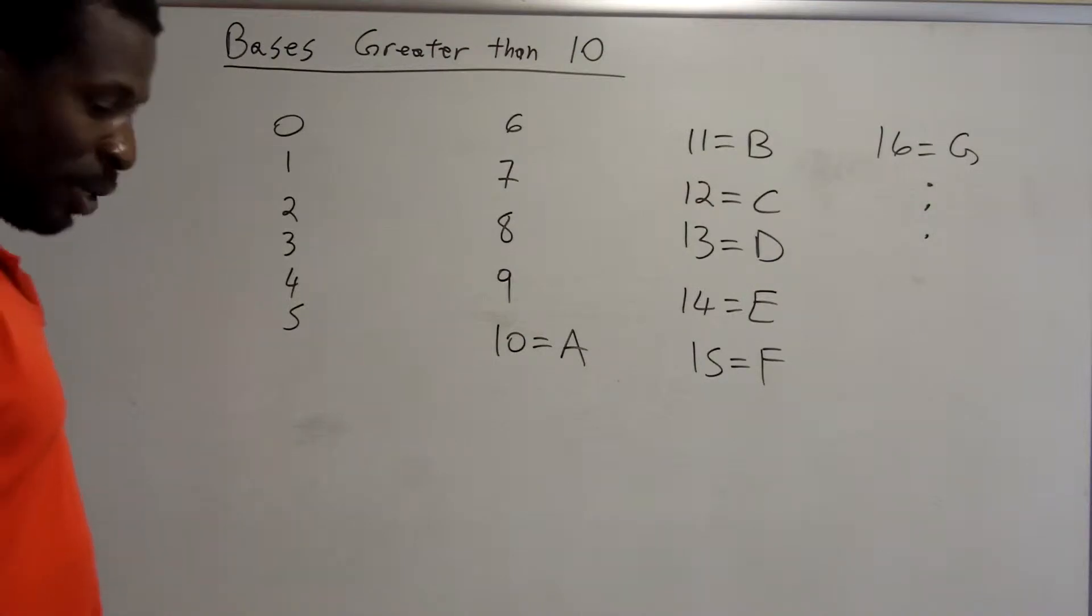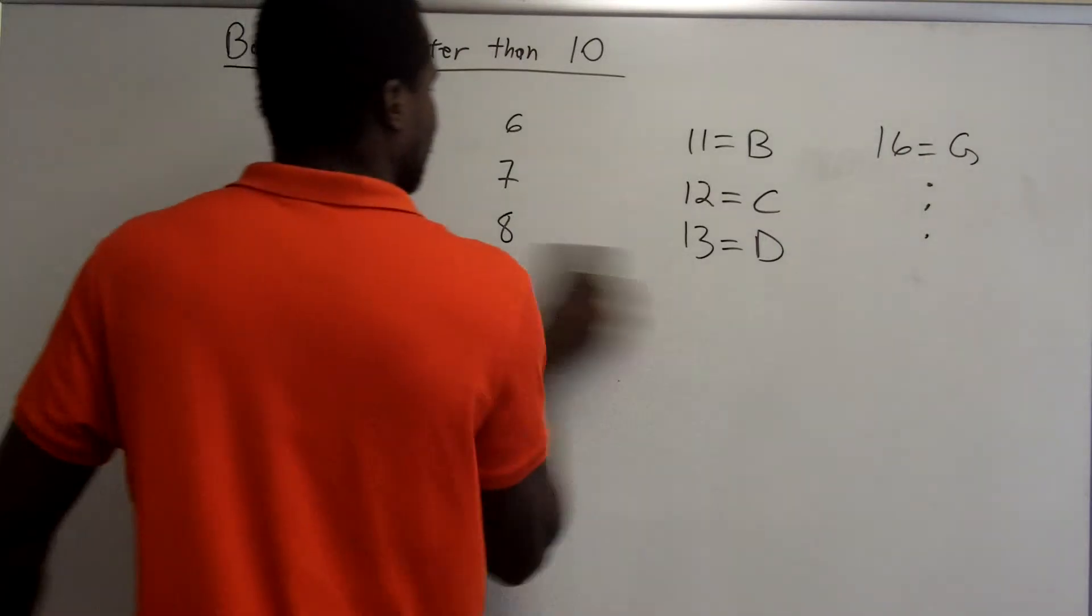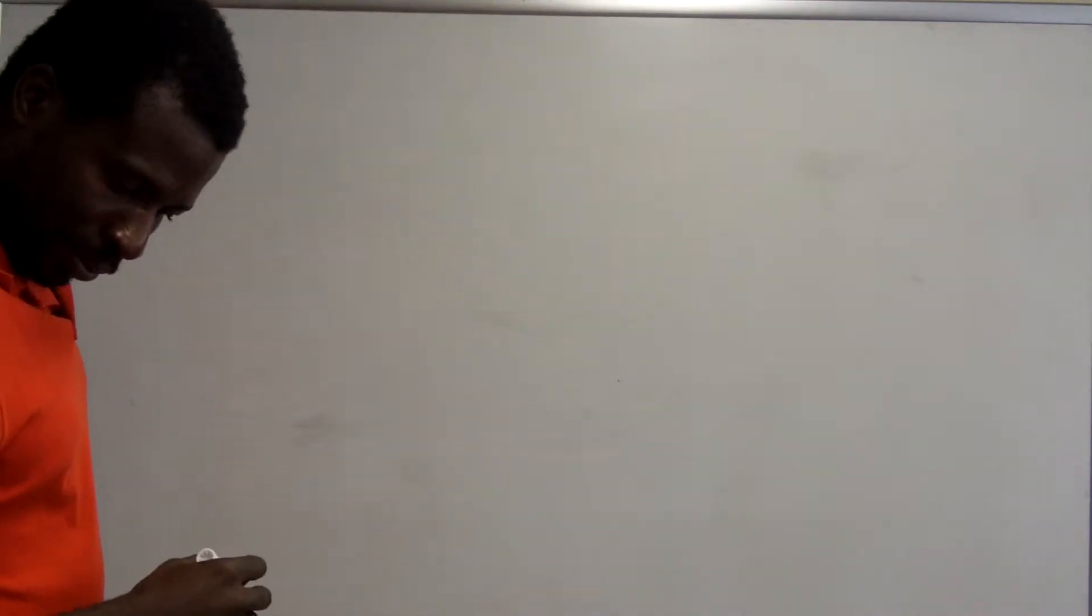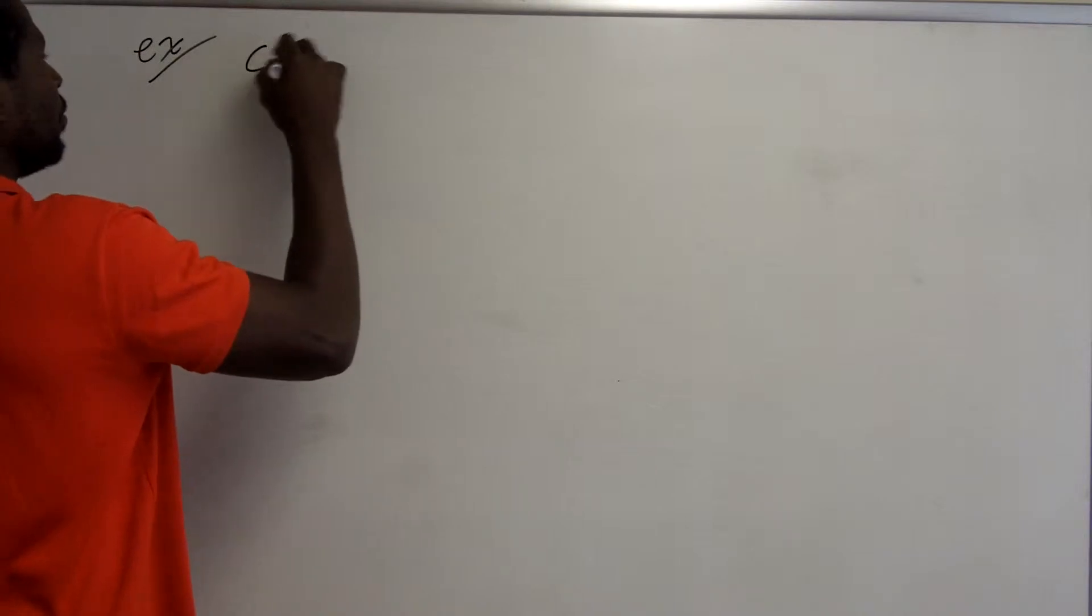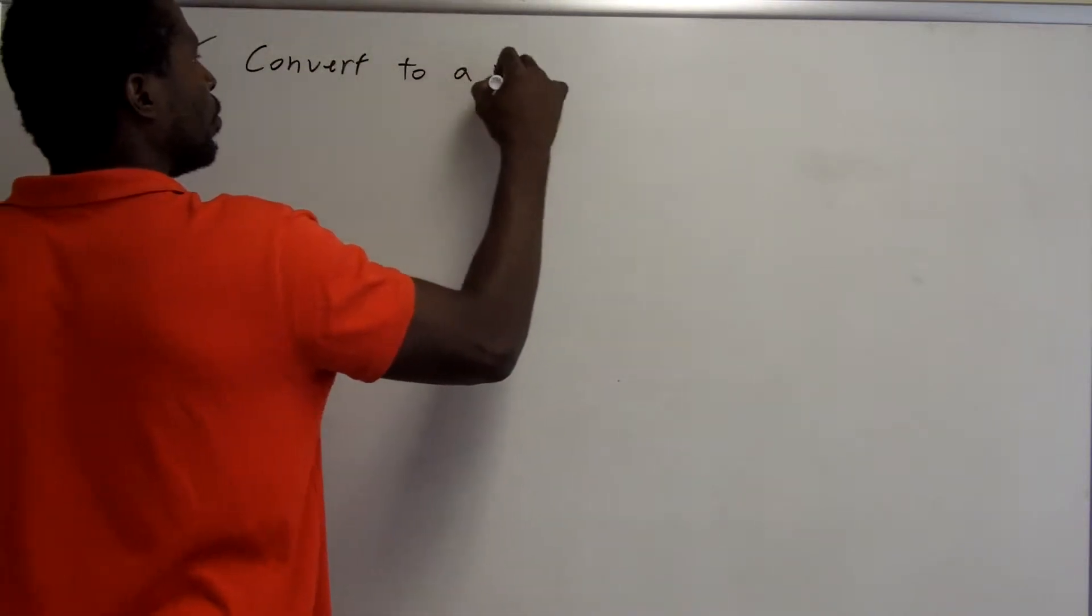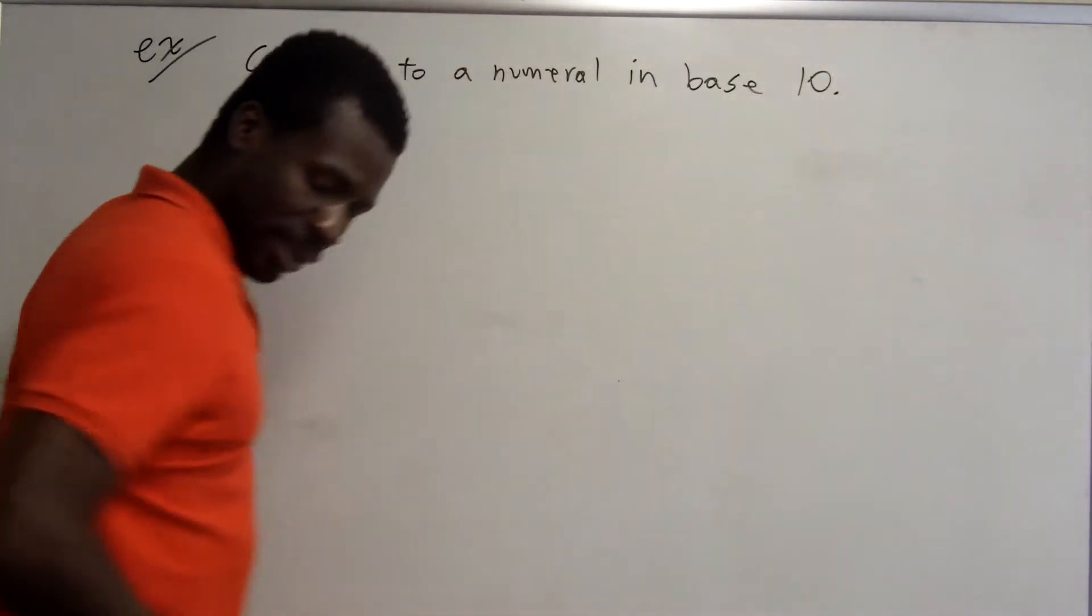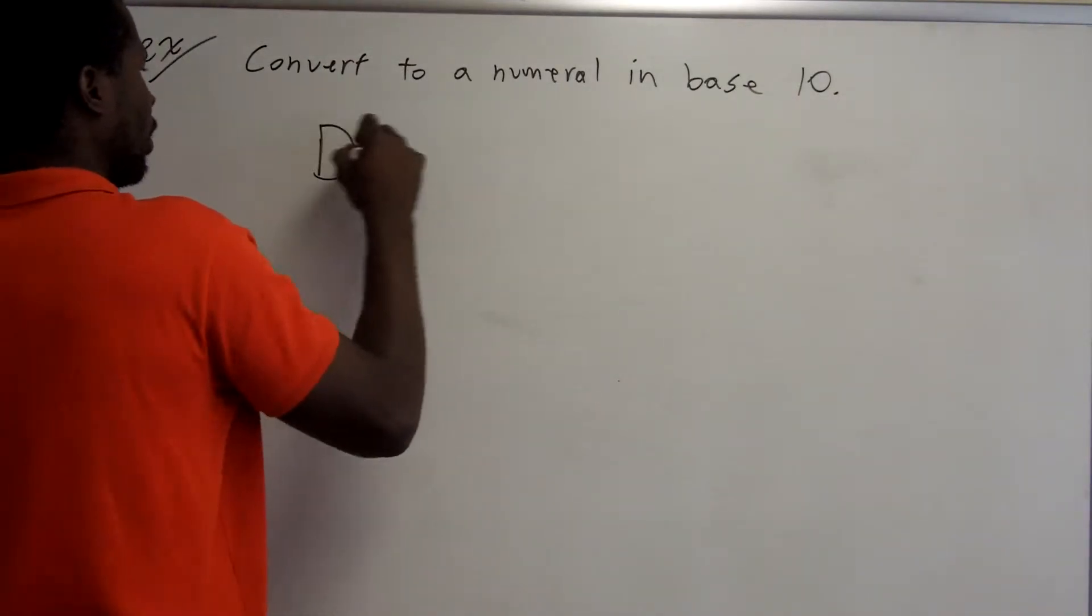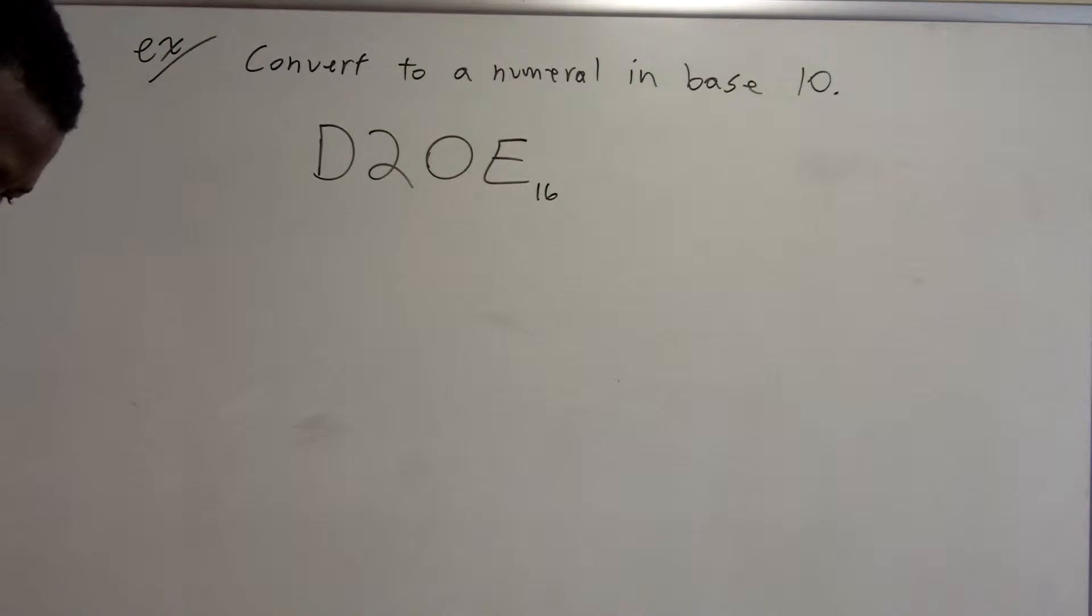Okay, so let's actually do some conversions in systems that have bases greater than 10. So first example. The first example is convert the given numeral to a numeral in base 10. And the number, the numeral that I want to look at is D20E base 16.